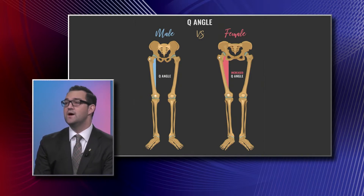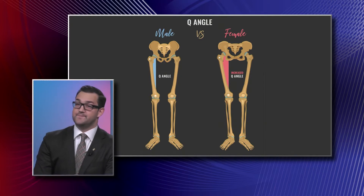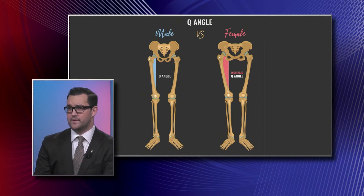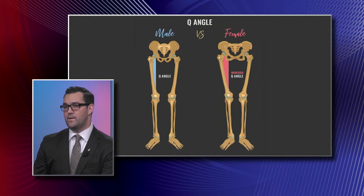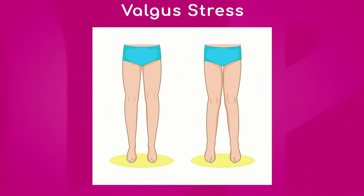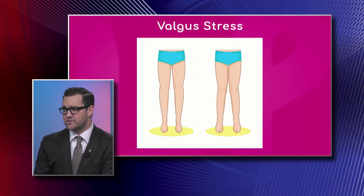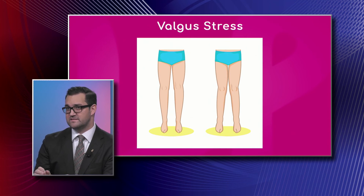Valgus stress is where the femur comes in laterally and the knees are almost in a knock-knee position, with the tibia angling out toward the ankle away from the midline. When you have that knock-knee stress, body weight isn't supported through the midline — it shifts medially — putting more stress on the ACL and more tension on that tissue, as seen in the image. There's also a valgus stress from a contact injury, where a lateral blow to the knee further propagates this knock-knee position and puts more stress on the knee, which can lead to a soft tissue injury.